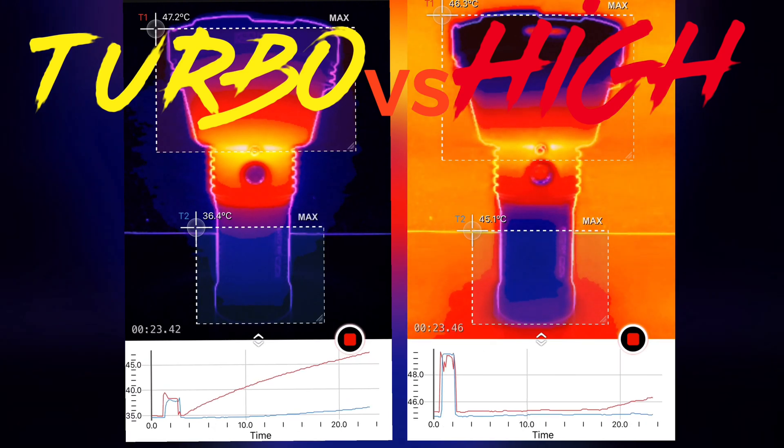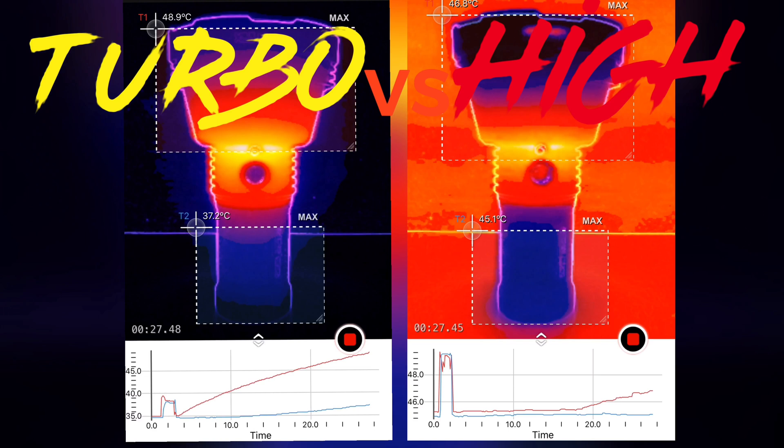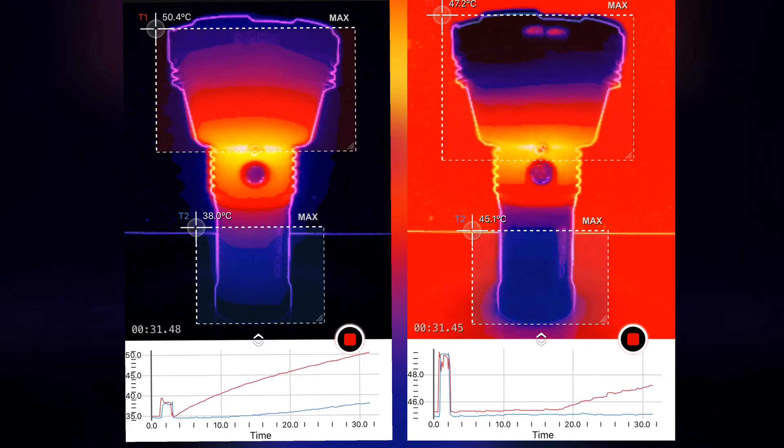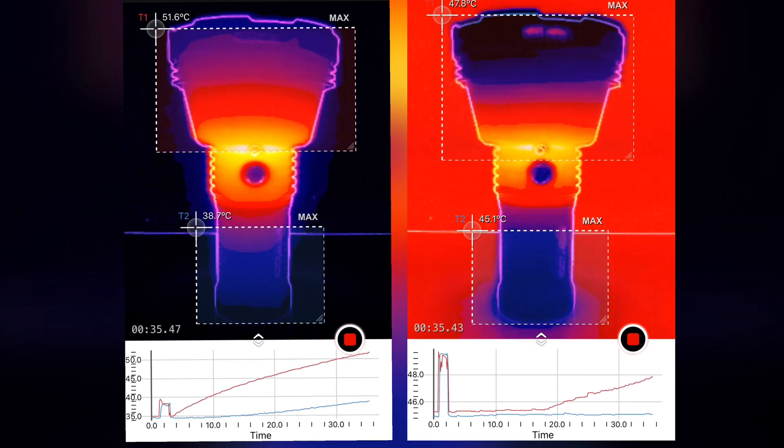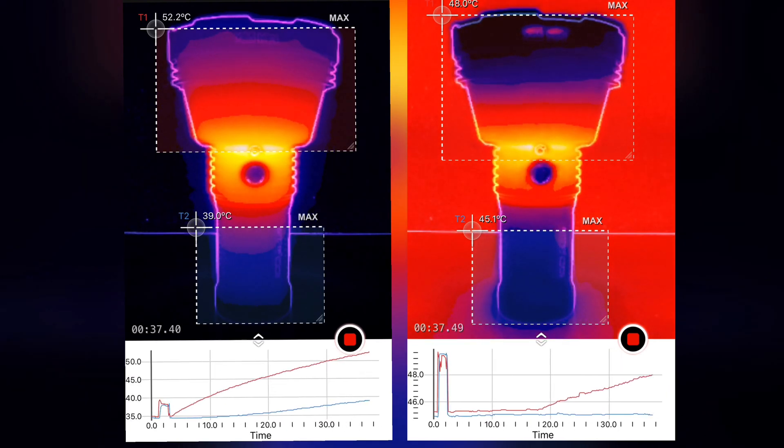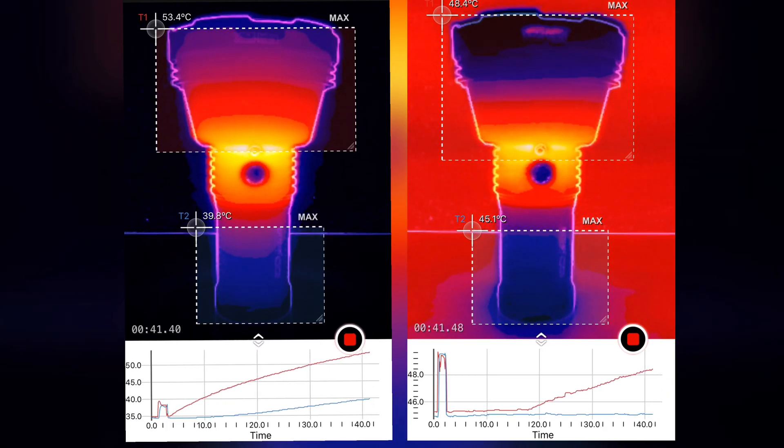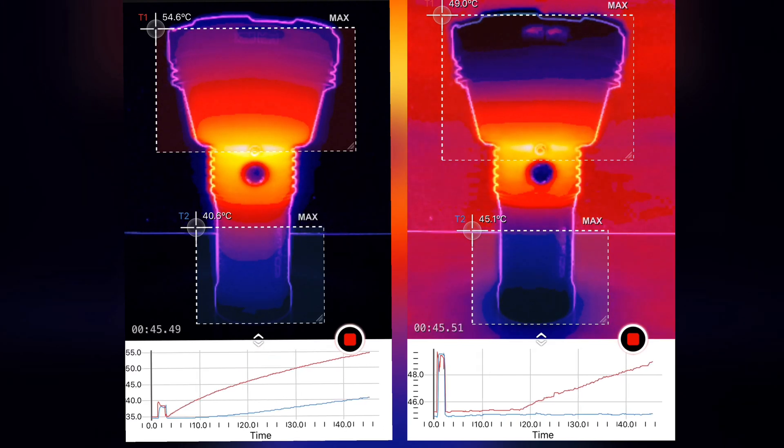As you notice, most of the heat is coming from right above the switch, and that is where the heatsink is and the LEDs are right above that, so that makes sense. On the turbo side it's definitely extending towards the reflector and the head area.